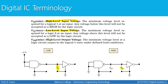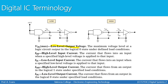That covers the inputs. We also have the same idea for outputs. The high level output voltage is the minimum voltage level a logic circuit output can have in order to be considered high — usually around 2 volts. If the voltage coming out of the NAND gate is below that, it will not be considered a high output. The low level output voltage is the maximum voltage level that a logic circuit output can have to be considered a logical 0 or low — it cannot go above this maximum level.